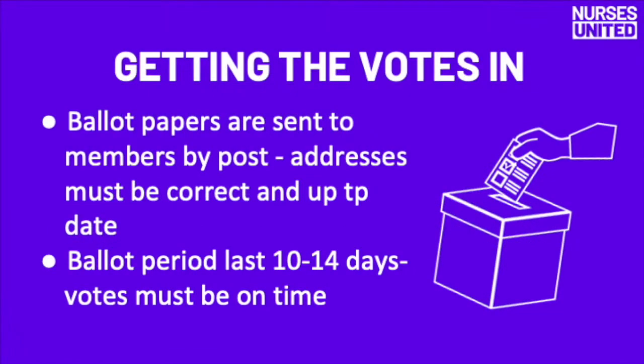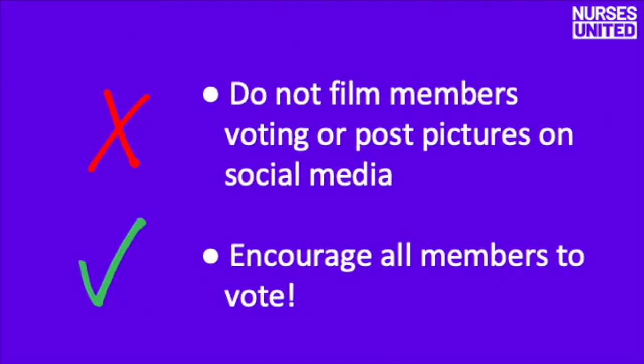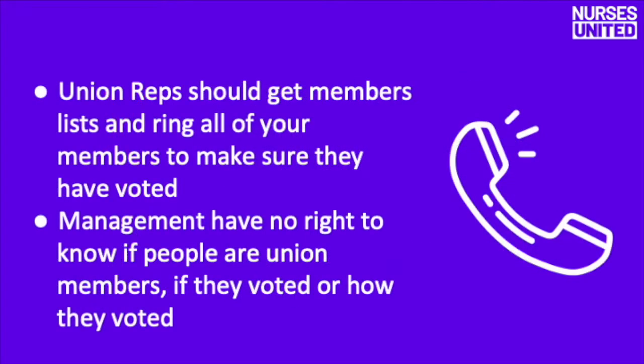Getting the votes in. All ballot papers are sent to members by post, so we need to make sure all our details are up to date with your union. The ballot period lasts 10-14 days and all votes must be submitted on time. Do not film or post pictures of members voting on social media, and encourage members to vote by messaging, email, and using all communications open to you. Union reps can go through the members lists and ring round members to make sure they have voted.